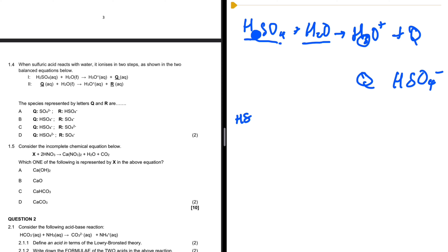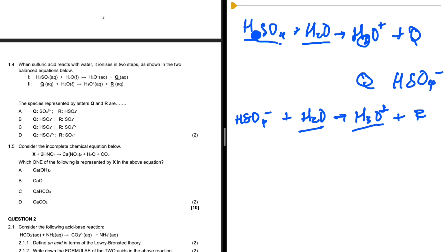In the second reaction, Q is HSO₄⁻ plus H₂O to give us H₃O⁺ plus R. H₂O has accepted a proton from HSO₄⁻ to give H₃O⁺, meaning HSO₄⁻ donates its proton and we are left with SO₄²⁻, which will be our R.